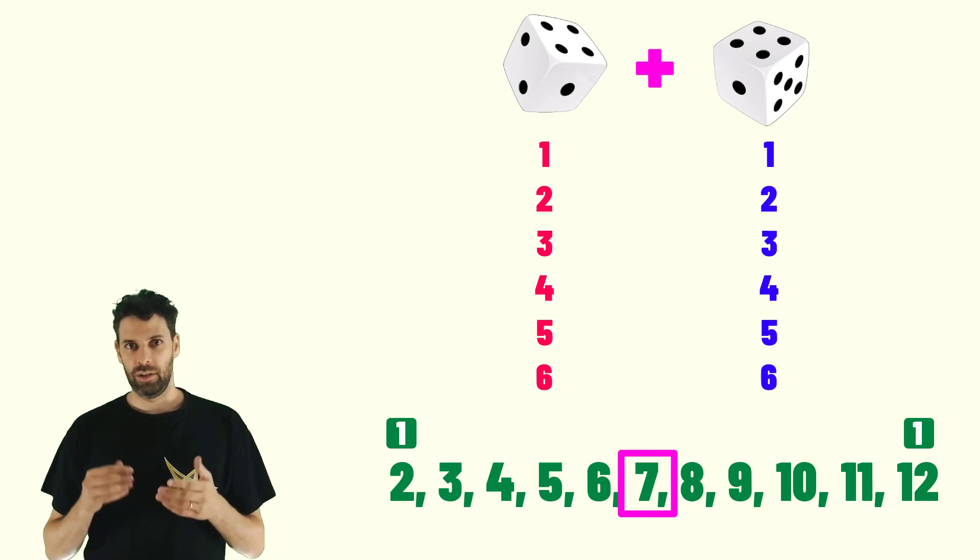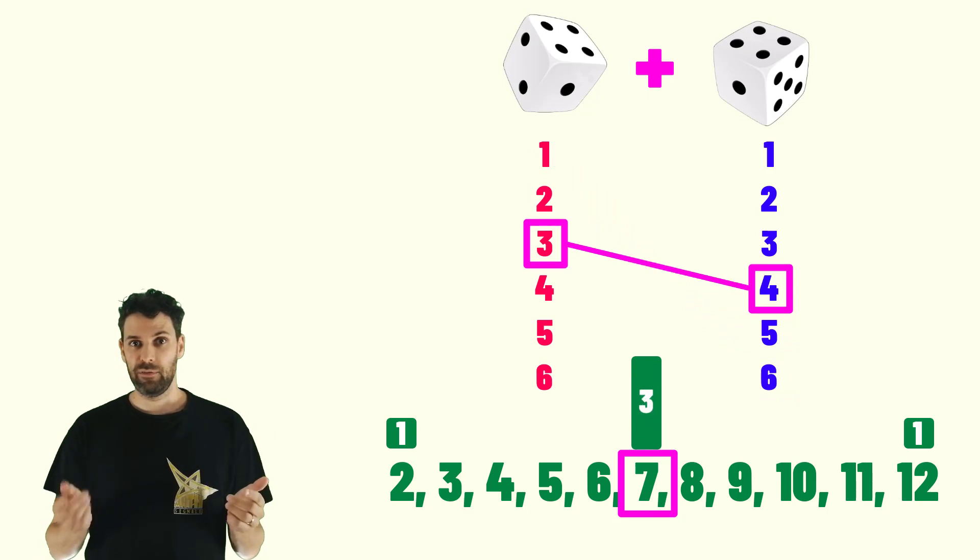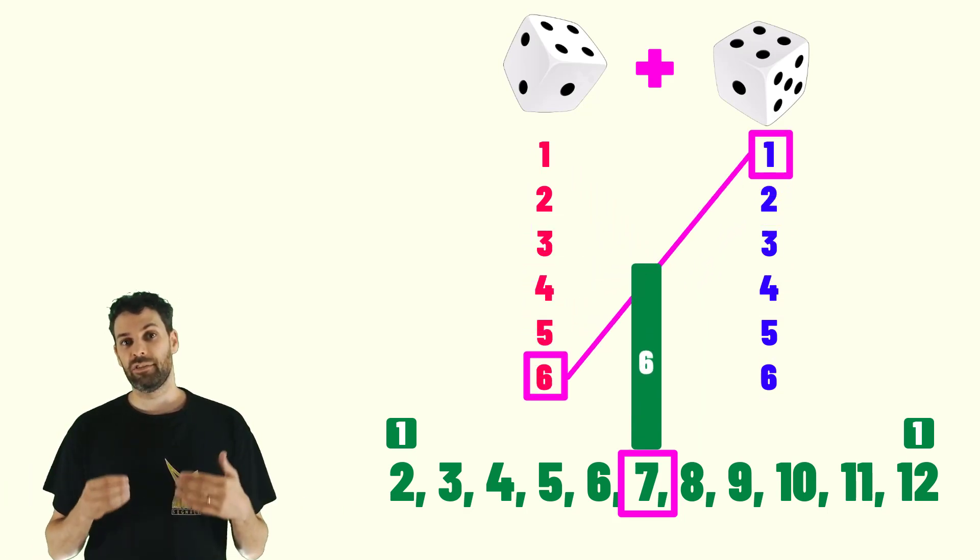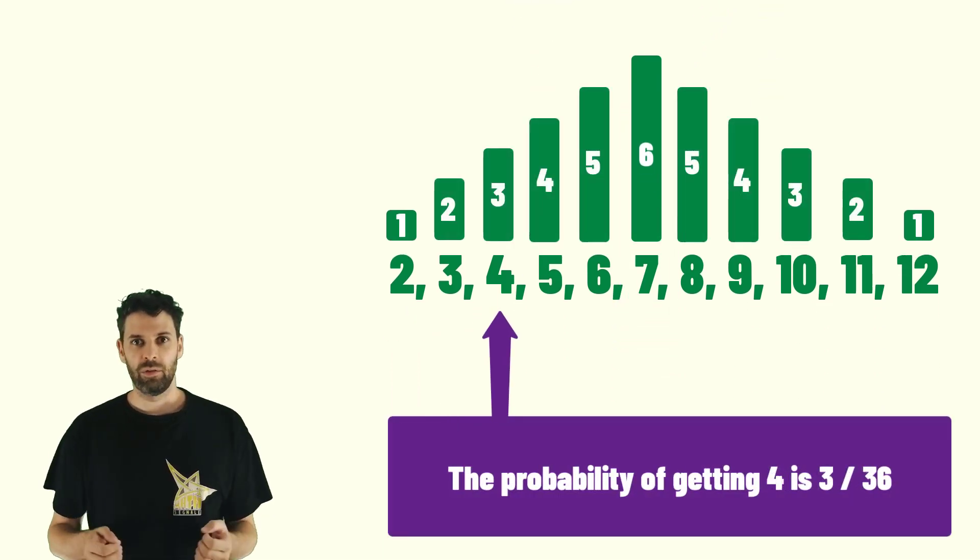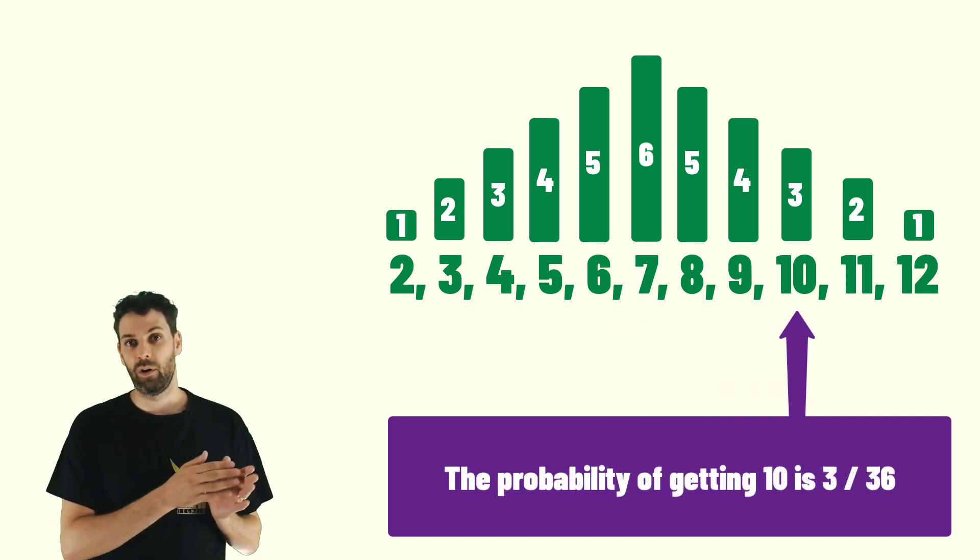The same holds for 12, but if you want to get 7 you have much more possibilities. For instance you could have 1 on the first die and 6, or 2 and 5, 3 and 4, or you can switch the role of the two dice and you get 6 chances. So once you know that the probability of a single event is 1 over 36, you can calculate the probability of every result.